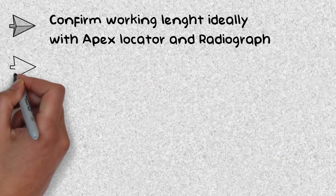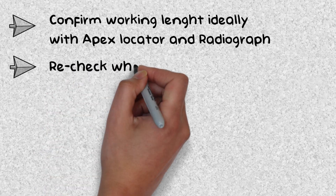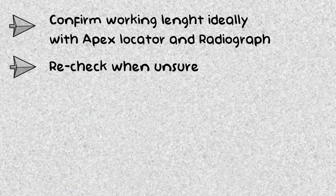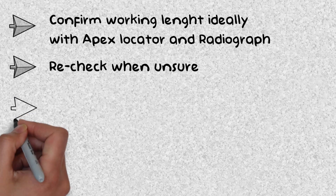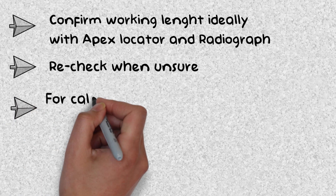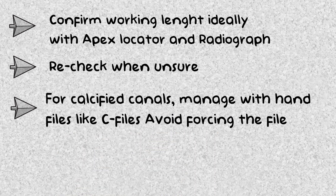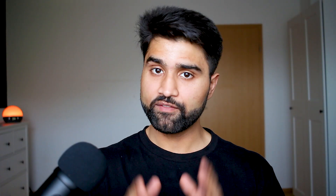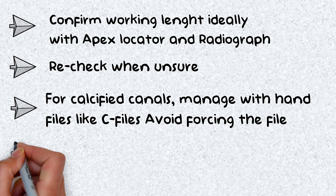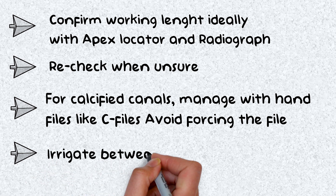Recheck if you change files or encounter any kind of unusual resistance. For calcified canals, manage with hand files like C-files, gently negotiating through the entire working length, and avoid forcing the file. Remember to just guide the file inside the canals rather than drilling the canals. And lastly, never forget to irrigate between files to clear your path.